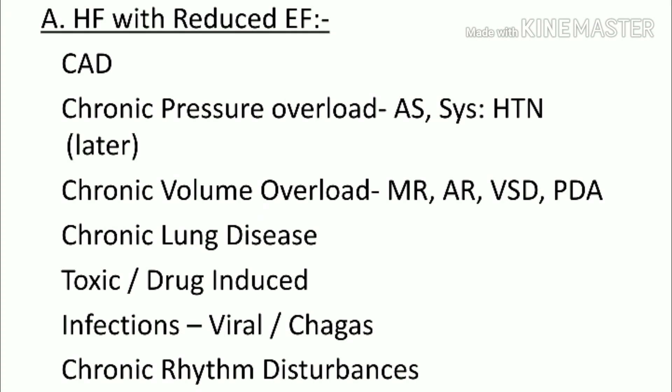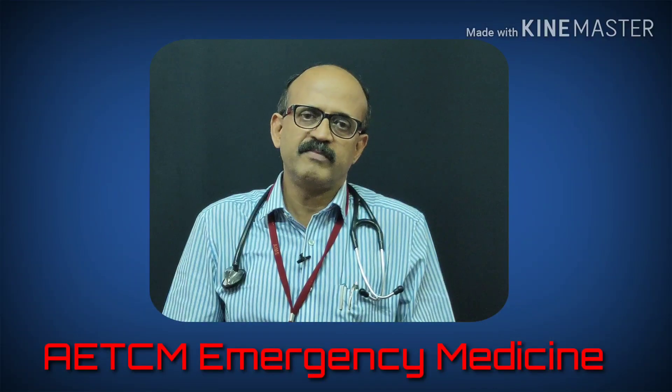Chronic volume overloads such as mitral regurgitation, aortic regurgitation, VSD, and PDA are important causes. Chronic lung disease usually affects the right side of the heart — often called cor pulmonale. Toxic agents and drugs can also damage the myocardium, leading to low output cardiac failure.